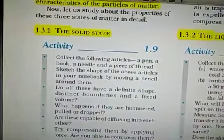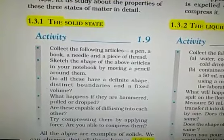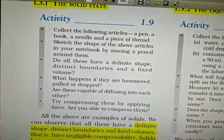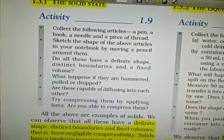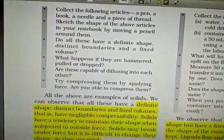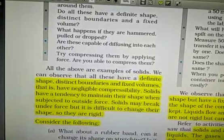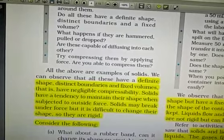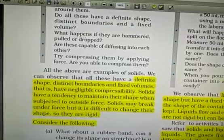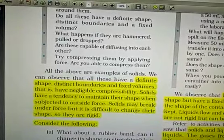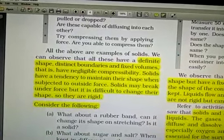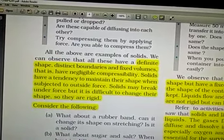Now, with the help of some activities, we are going to discuss them one by one. First, solid state. Collect some articles - pen, book, needle, piece of thread, etc. Sketch their shape on paper. You will be able to sketch their shape because they have definite shape, distinct boundaries, and fixed volume. If you hammer, pull, or drop them, there is very little distortion in the shape, least compressibility, and they can break but cannot change their shape. If you keep them close to each other, they can't diffuse with each other.